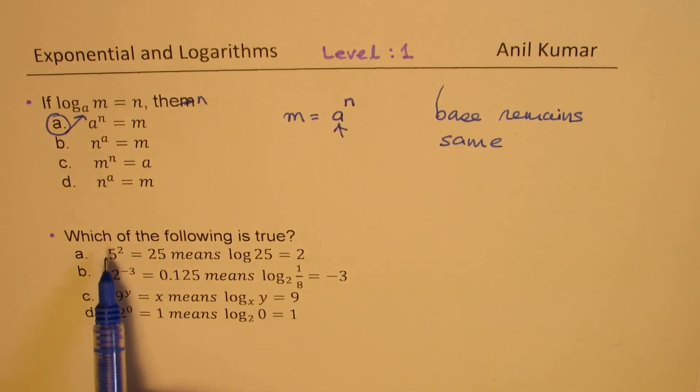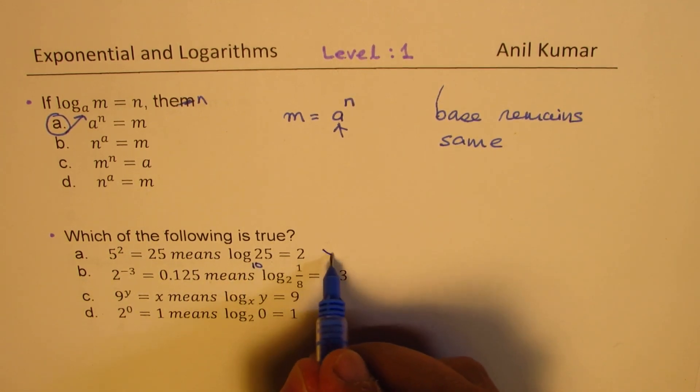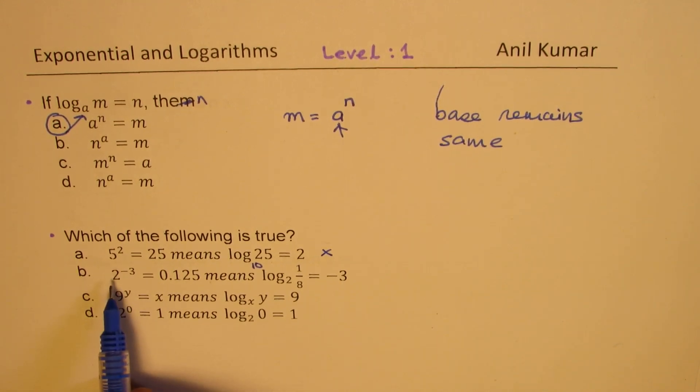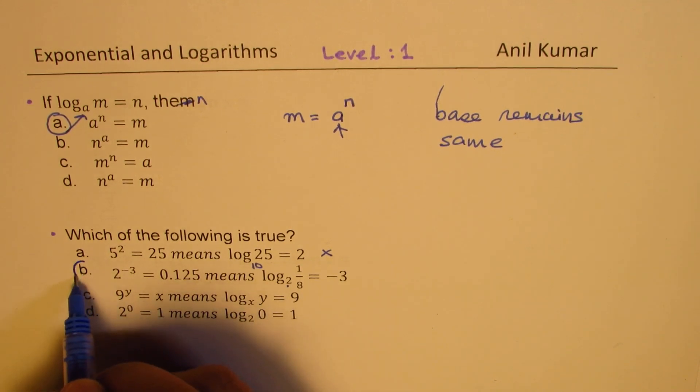Which of the following is true? We have four statements. Which one of them is true? Five squared equals 25. Five is the base. Here the base is 10. This base is 10, so that is not correct. Two to the power of minus three equals 0.125. Base is two. And 0.125 is one over eight, and that is two to the minus three. So this is correct.